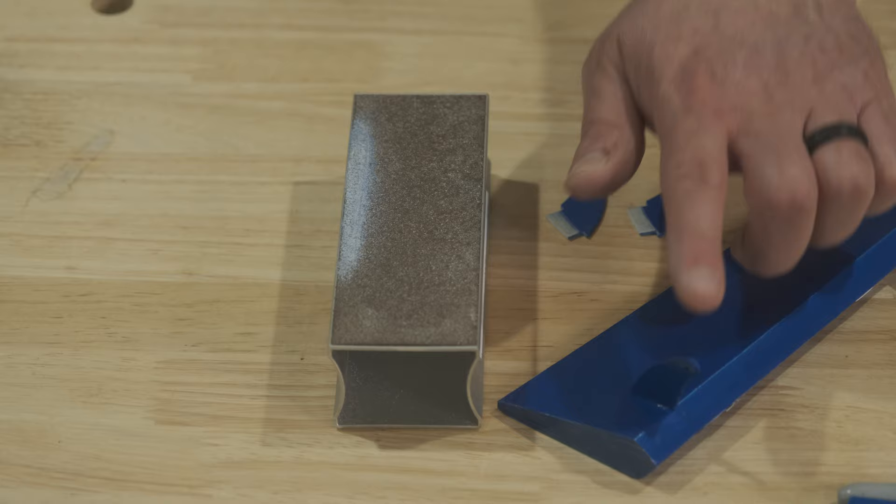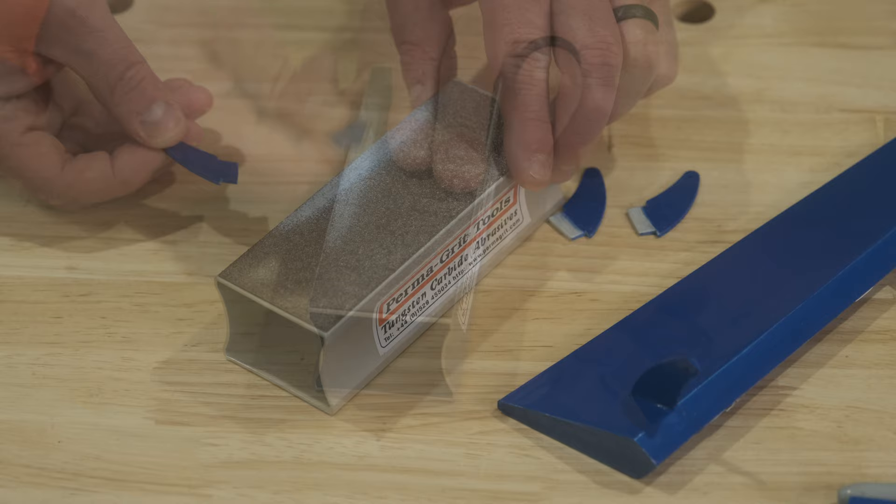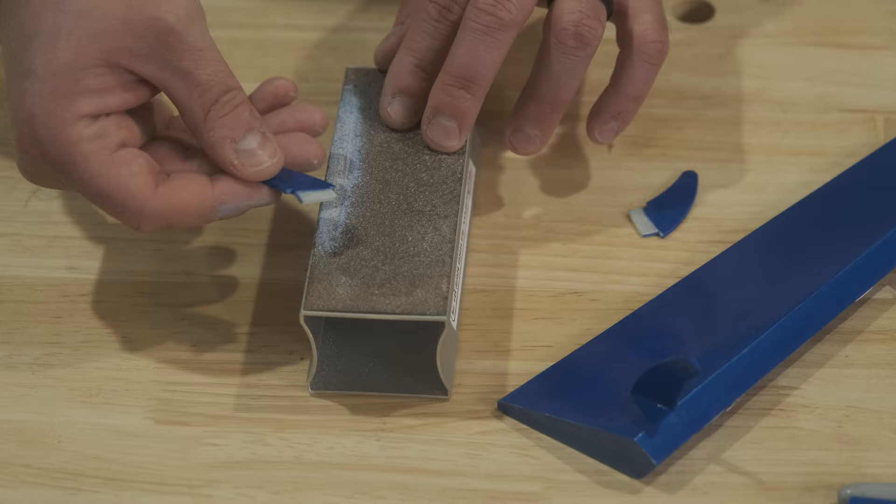First things first with the control horns, we need to sand the portions that are going to be glued in, especially since they're painted. But even if they weren't painted you would have to do this because you want to create a rough surface for the epoxy to adhere to.